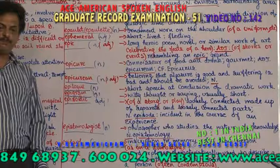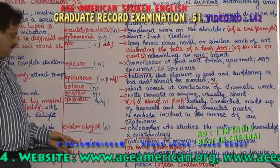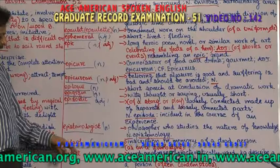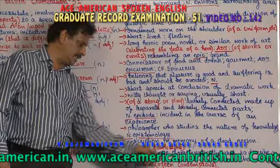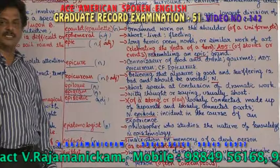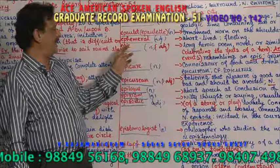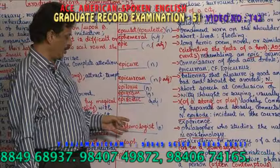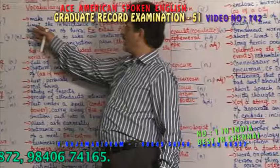Epitaph — it is an inscription in memory of a dead person. Inscription in memory of a dead person is called epitaph, as on a tombstone. Epithet — a word or phrase characteristically used to describe a person or thing. A phrase used to characterize a person is called epithet.